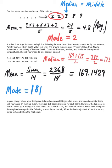In your biology class, your final grade is based on several things: a lab score, scores on two major tests, and your score on the final exam. There are 100 points available for each score. However, the lab score is worth 17% of your total grade, each major test is worth 22%, and the final exam is worth 39%. Compute the weighted average for the following scores.